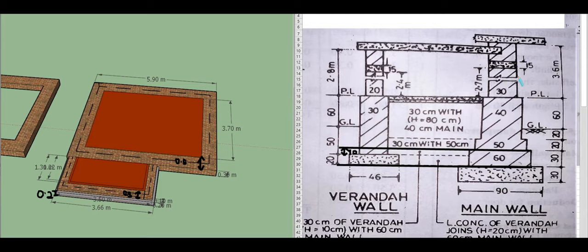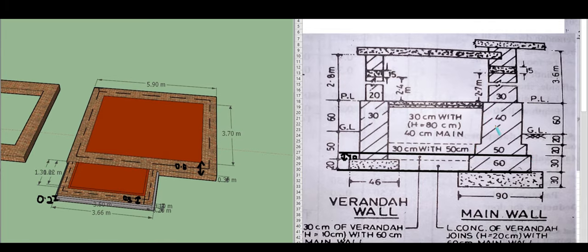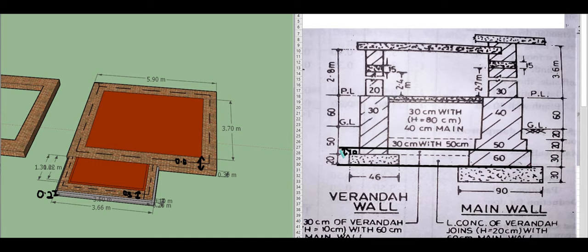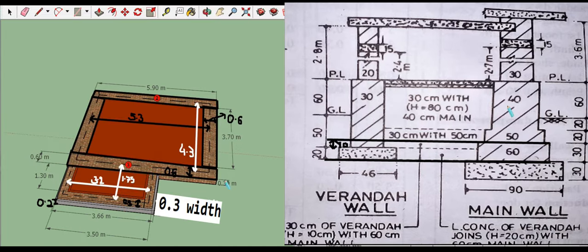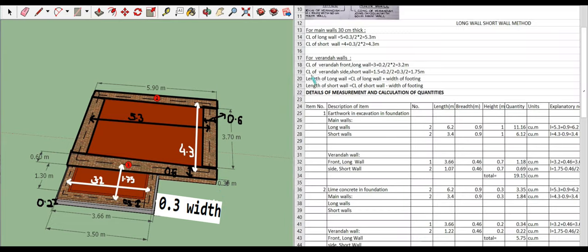Now starting first class brickwork in foundation and plinth. Looking at the section: first footing width is 0.6 meters, second footing also given, and footing up to plinth. Starting with the first footing at 30 centimeter height. The lime concrete is 20 centimeters, so remaining height is 10 centimeters, making the 0.3 meter high first footing level.